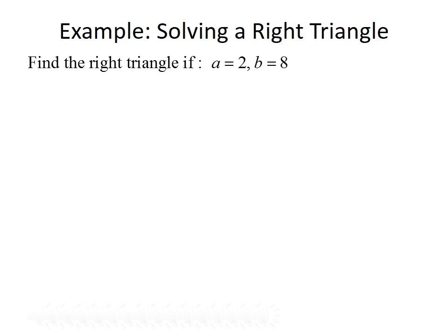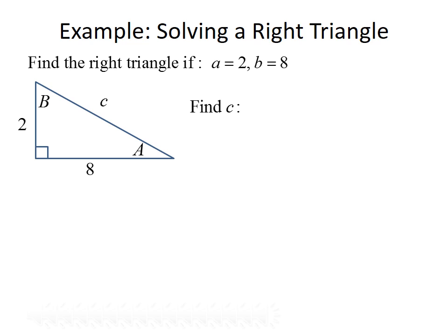Let's look at another example where we want to solve a right triangle. This time, we have side a equal to 2 and side B equal to 8. The first thing to do is sketch out the triangle. We're looking for side C, angle A, and angle B. Since we already know sides a and B, we'll start by finding side C using the Pythagorean theorem.